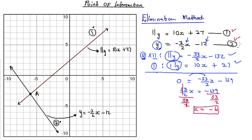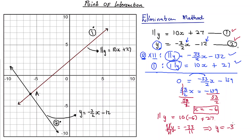Now using equation one to find y, substituting x = negative 6: 11y = 10 times negative 6 plus 27, which gives 11y = negative 33. Dividing both sides by 11, y equals negative 3. This confirms our point of intersection A = (−6, −3), which we found through the graphical method, the substitution method, and the elimination method.